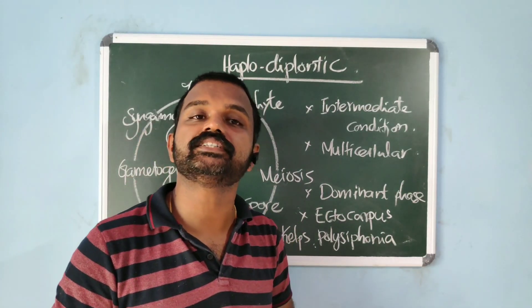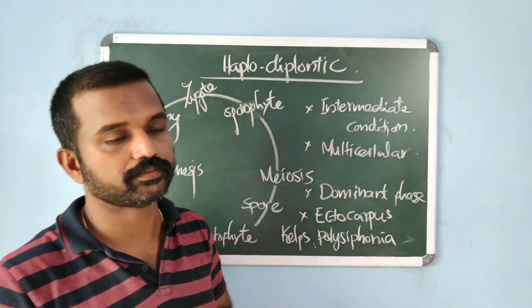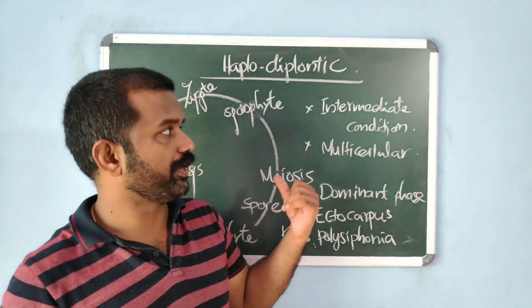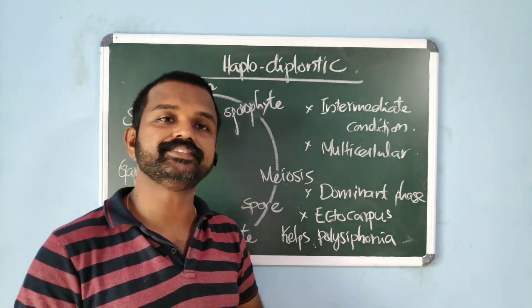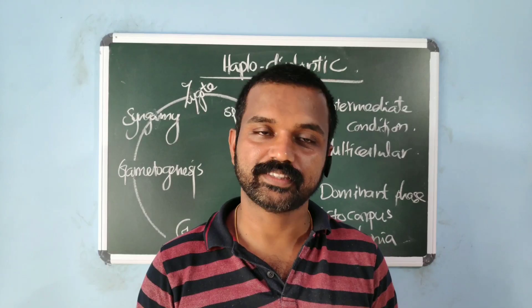Plant life cycles are of three types: haplontic, diplontic, and haplodiplontic. That's all about this video. That's all about the plant life cycles. If you are not yet subscribed, please subscribe to my channel. And if you have any doubt regarding this topic, please comment below. Thanks for watching.